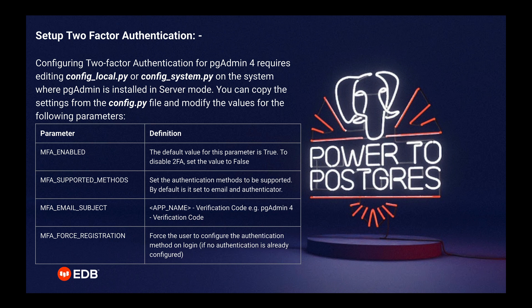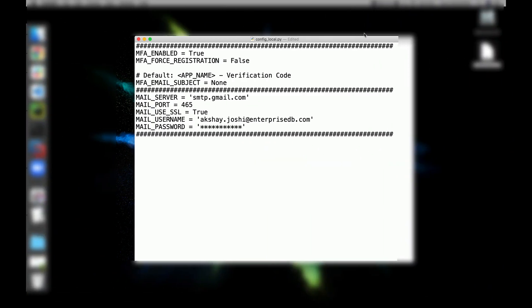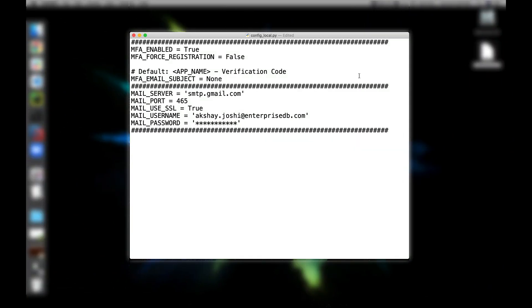mfa_email_subject — you can provide the subject when you receive the verification code using email; by default it is the app name hyphen verification code. mfa_force_registration — forces the user to configure the authentication method on login if no authentication is already configured. This is how config_local.py or config_system.py looks: the settings are mfa_enabled equal to true, mfa_force_registration equal to false.